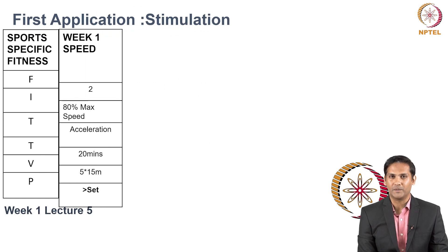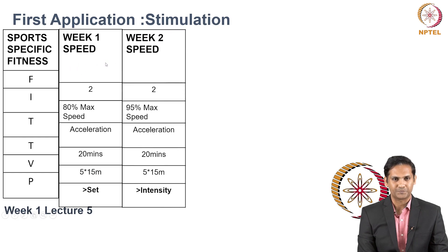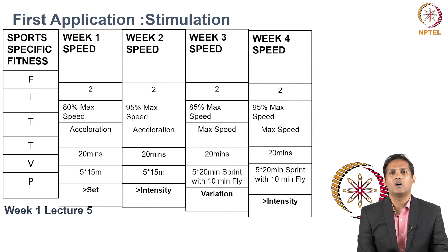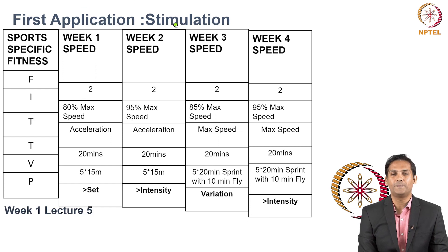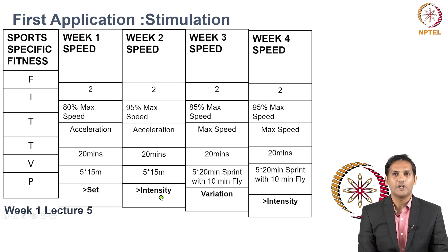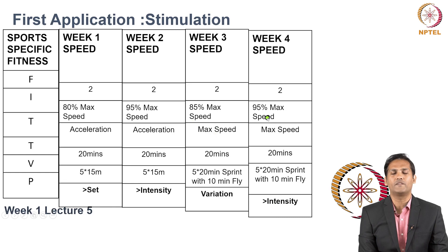Now let's use another example where the fitness variable is speed. First, here is how I programmed my one-month speed session using FITTVP stimulation. In week one, I gave stimulation by greater sets. In week two, I increased the intensity. In week three, I changed the type of speed — in weeks one and two I was training acceleration, and now I am training max speed. In week four, I increased the intensity from 85% to 95% of max speed.